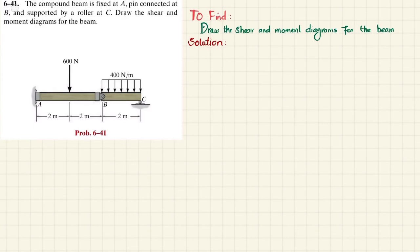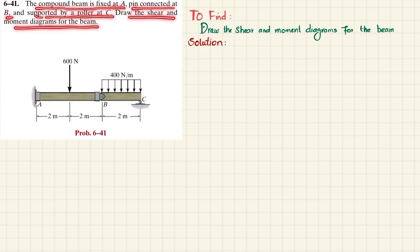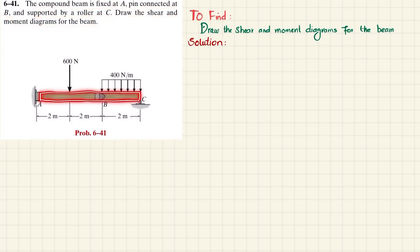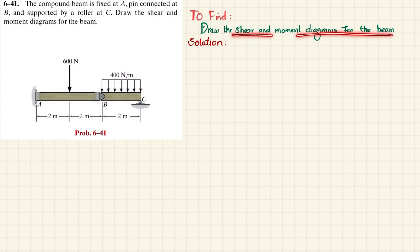Welcome back, problem 6-41. The compound beam is fixed at A, pin connected at B, and supported by a roller at C. We need to draw the shear and moment diagram for this compound beam.